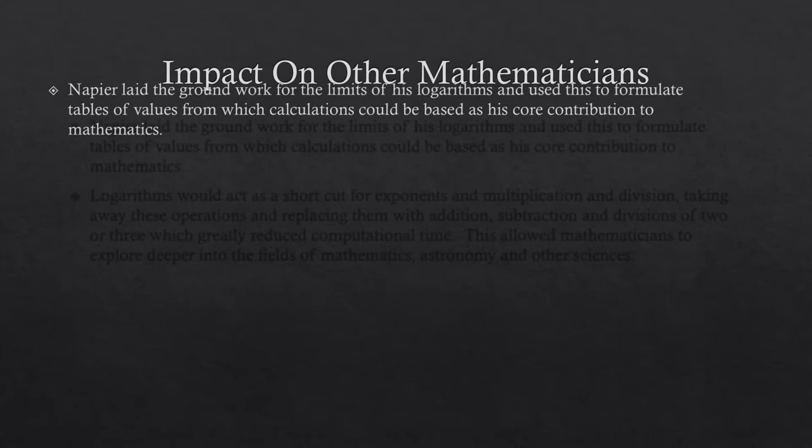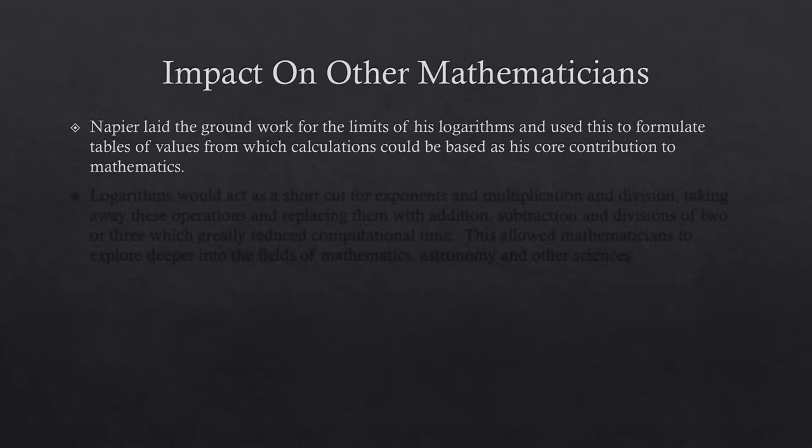Napier laid the groundwork for the limits of his logarithms and used this to formulate tables of value from which calculations could be based as his core contribution to mathematics. Logarithms would act as a shortcut for exponents and multiplication and division.